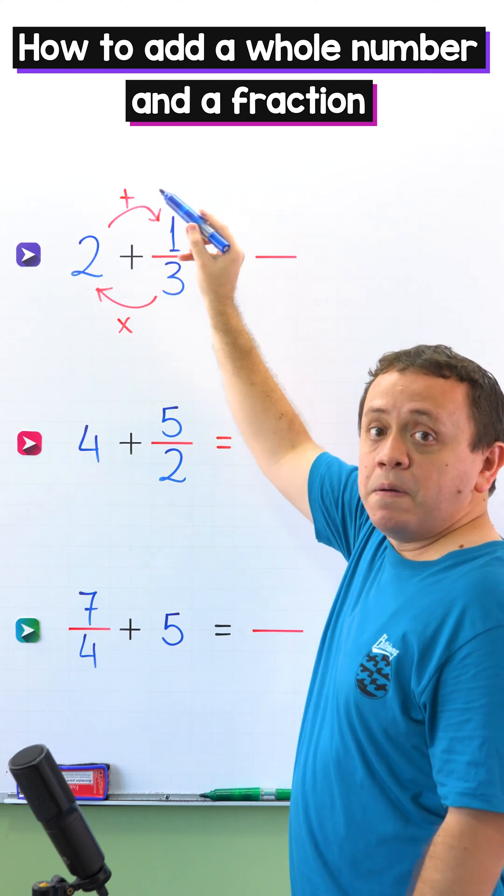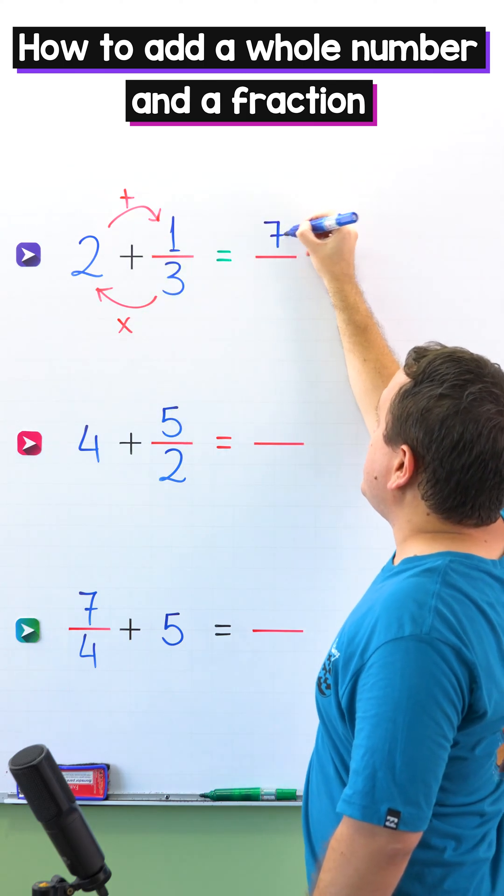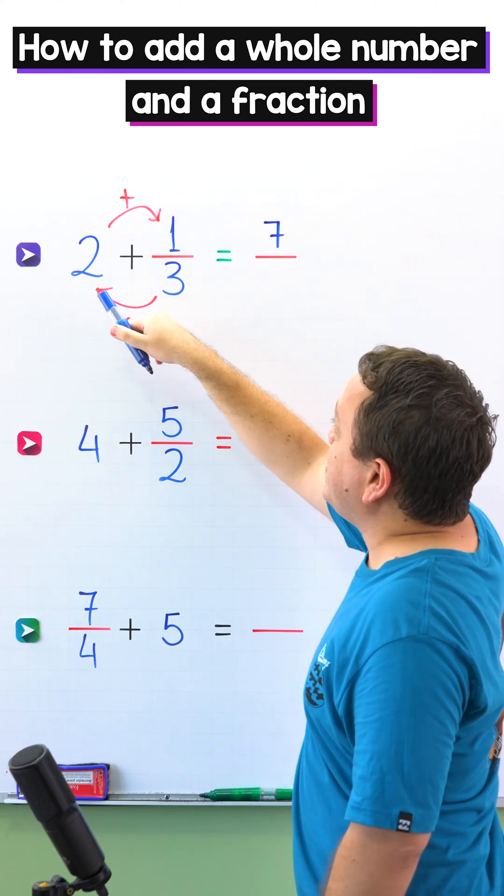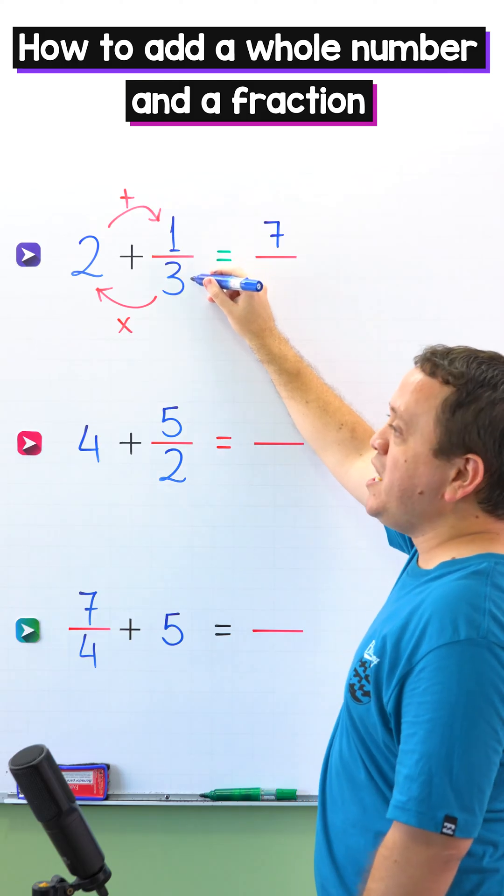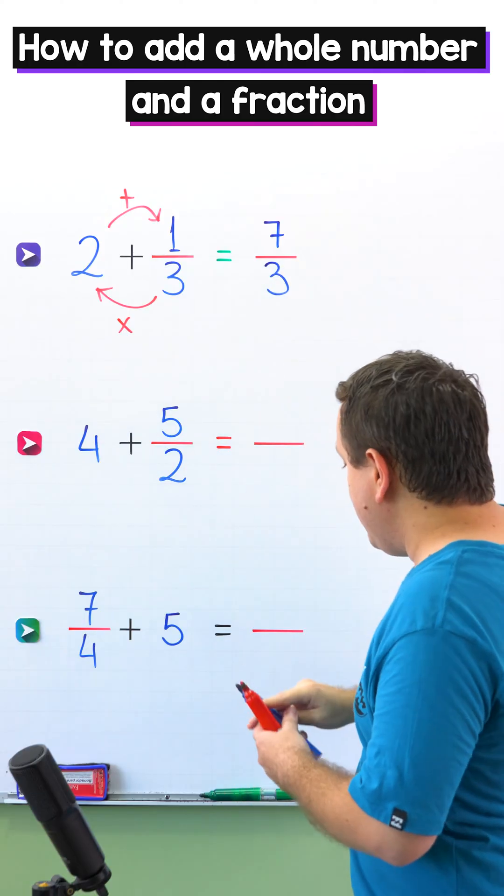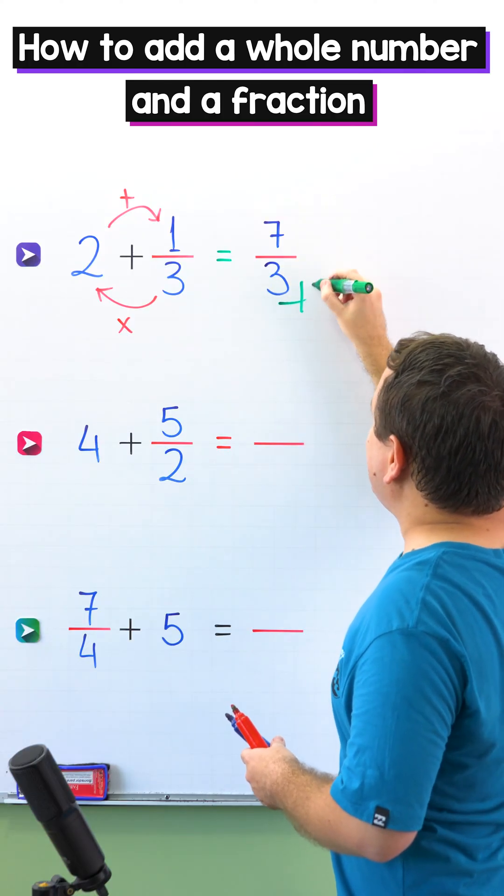3 times 2 is 6 plus 1 gives us 7. Once again, 3 times 2 is 6 plus 1 equals 7. Next, we keep the denominator the same, so 3 come over here. The answer is 7 thirds. Perfect!